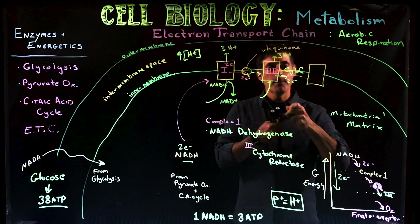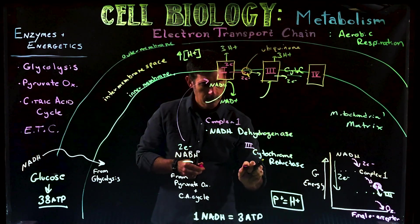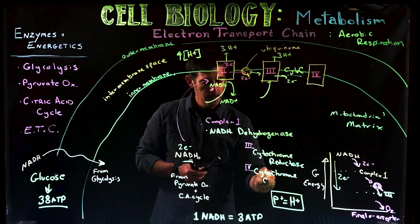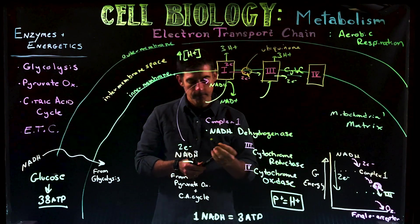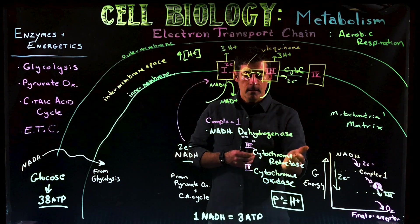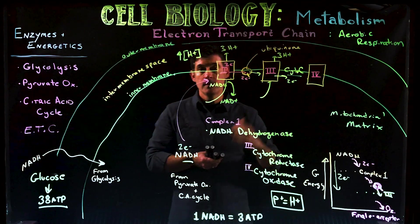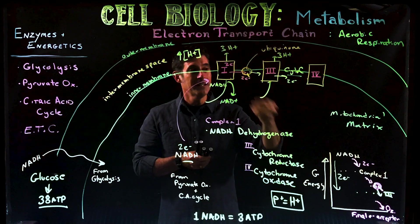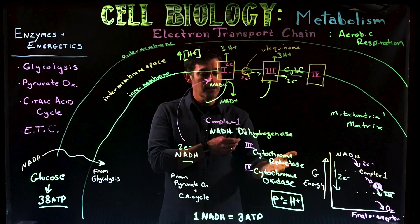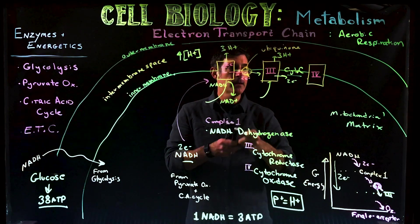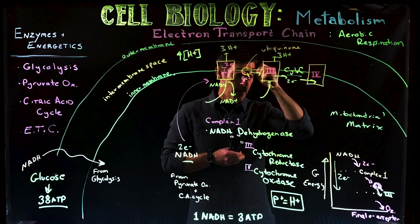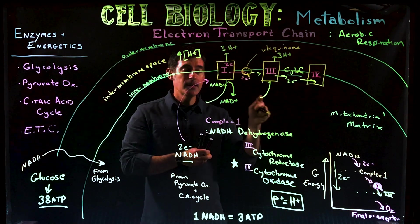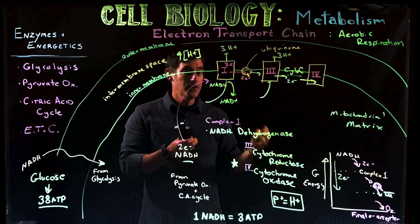From cytochrome C, we go to Complex IV, called cytochrome oxidase. To remember: reduction means to gain electrons, and oxidation means to remove electrons. So cytochrome reductase gave electrons to cytochrome C (cytochrome C gained them), and cytochrome oxidase removes electrons from cytochrome C. Those two electrons move from cytochrome C to Complex IV, cytochrome oxidase.